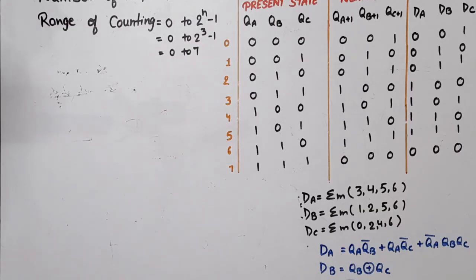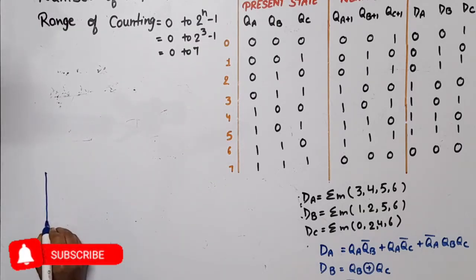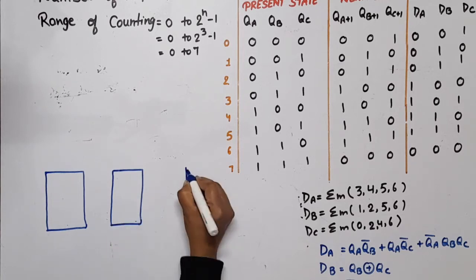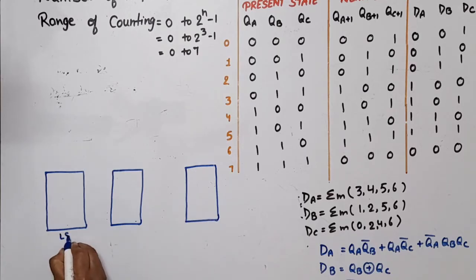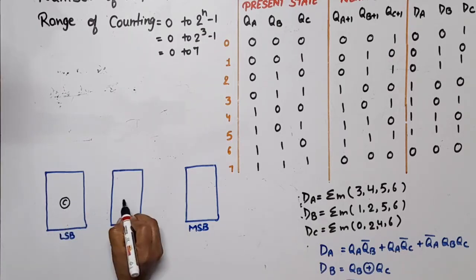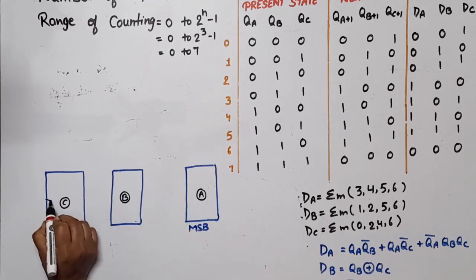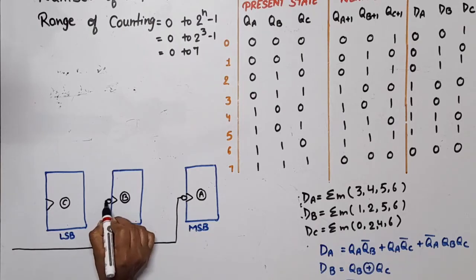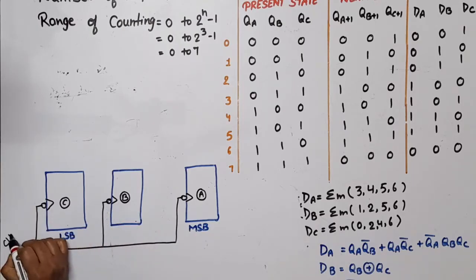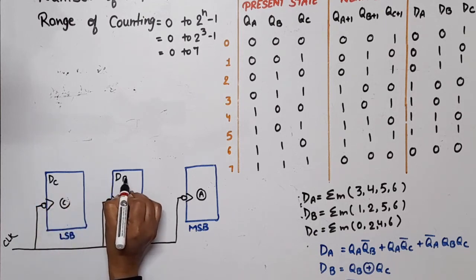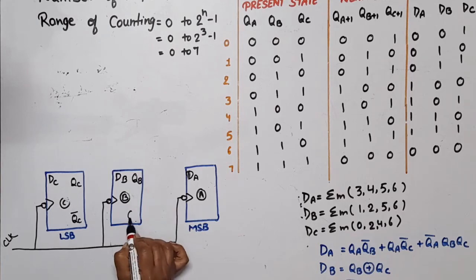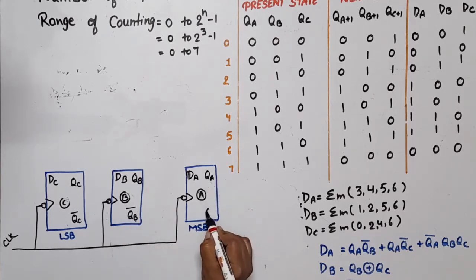Three flip-flops are required: one, two, and three. We need to remember that the LSB is flip-flop C and the MSB is flip-flop A. Synchronous counter means the clock will be the same for all flip-flops. I apply the same clock pulse to all three. The inputs are DC, DB, and DA respectively, with corresponding outputs QC, QC̄, QB, QB̄, QA, and QĀ.